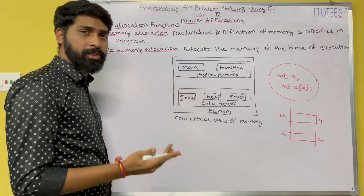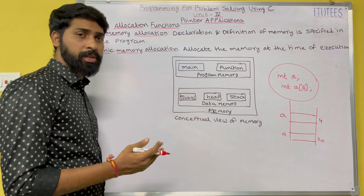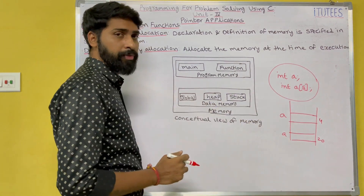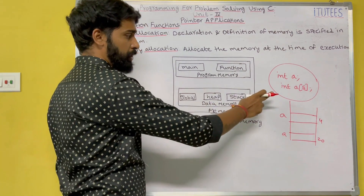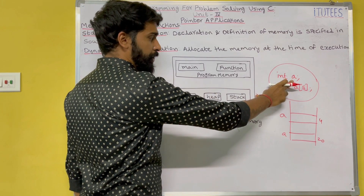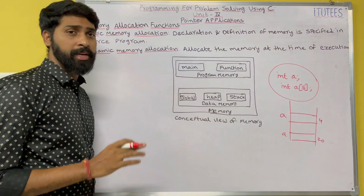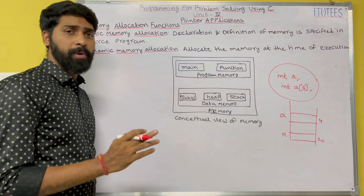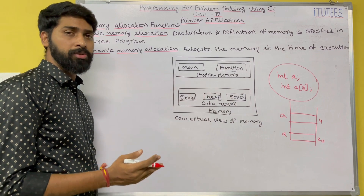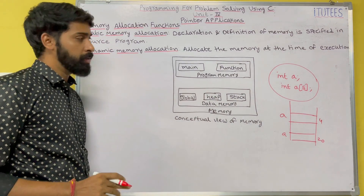Memory allocation functions means you are going to allocate memory by using functions. When you simply declare a variable without any function, the memory is allocated automatically — that type is called static memory allocation. If you allocate memory using a function, that is called dynamic memory allocation.